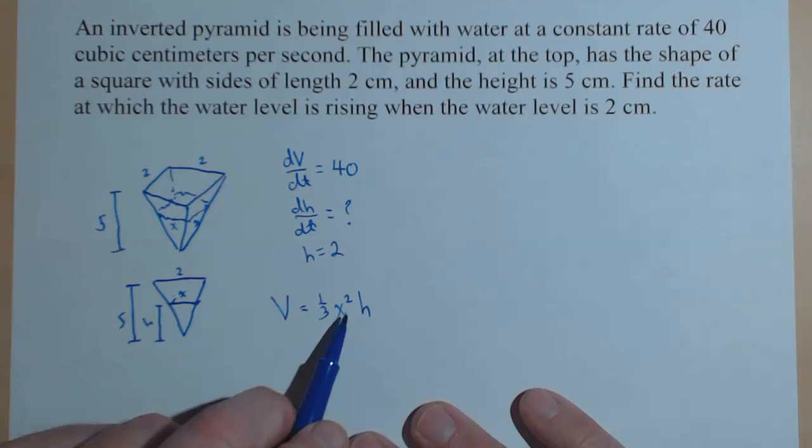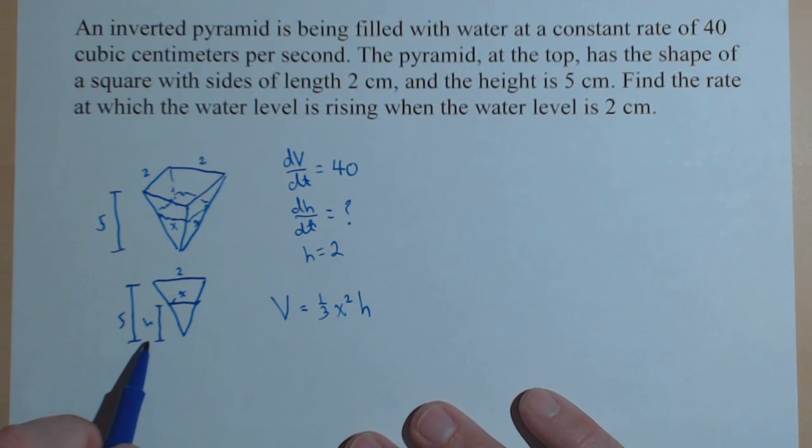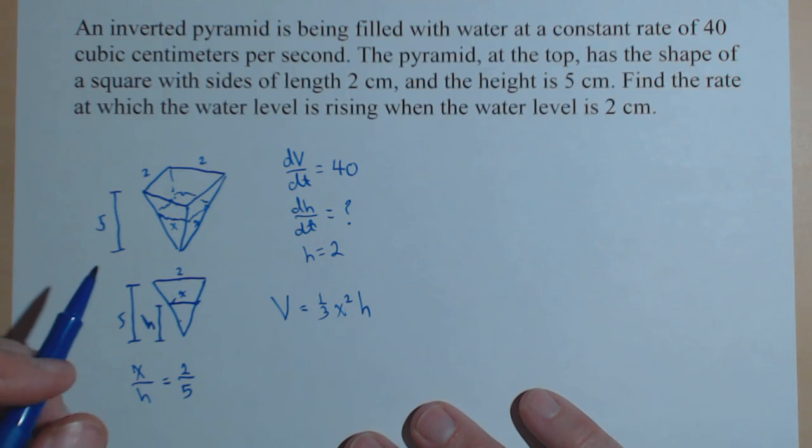Now I've got two variables in here. The other thing I can get out of my drawing is I have similar triangles, because I have a triangle inscribed inside another triangle. So I can relate the ratio of the sides. x is to h as 2 is to 5. Nice property of similar triangles. We see that a lot in related rates and optimization problems. I can solve this for x. So x equals 2 fifths h.